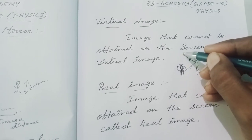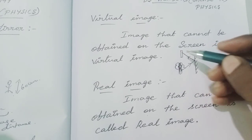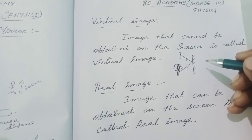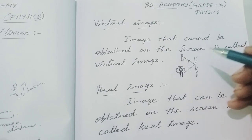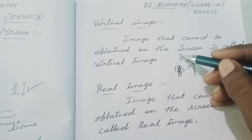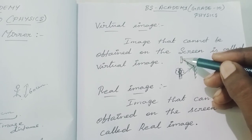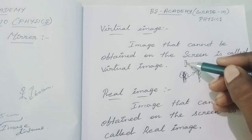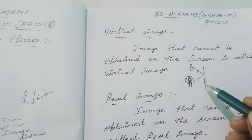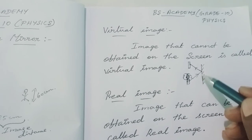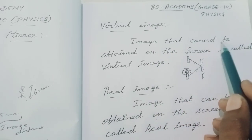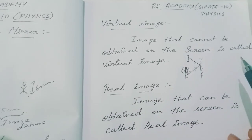After the rays fall on the plane mirror, they get reflected back. If you place a screen in front of the plane mirror, the image of the tree should appear on the screen for it to be a real image. But in the case of the plane mirror, the image will not be obtained on the screen. That type of image which cannot be obtained on the screen is called a virtual image. That's why the image formed by a plane mirror is a virtual image.